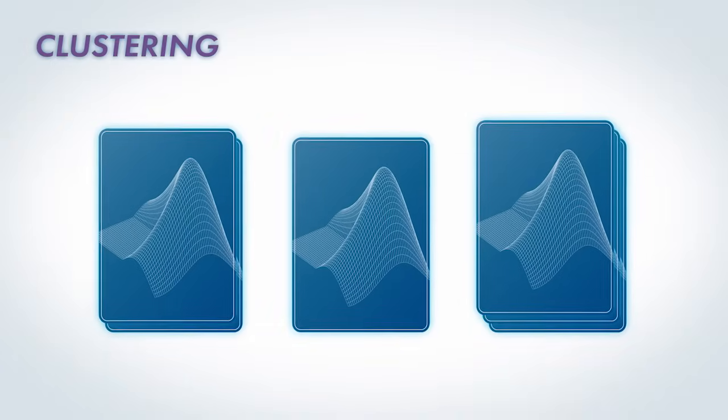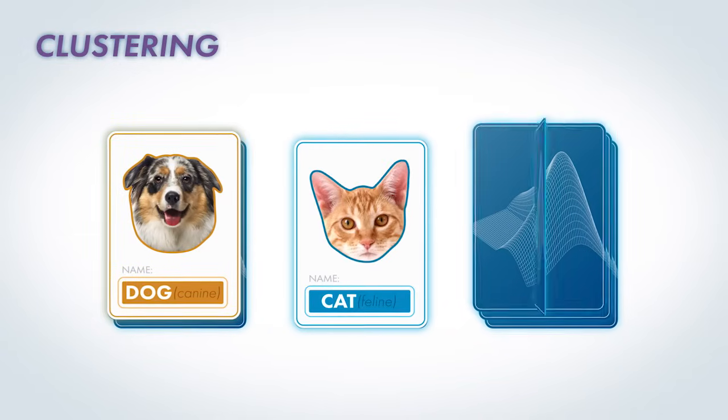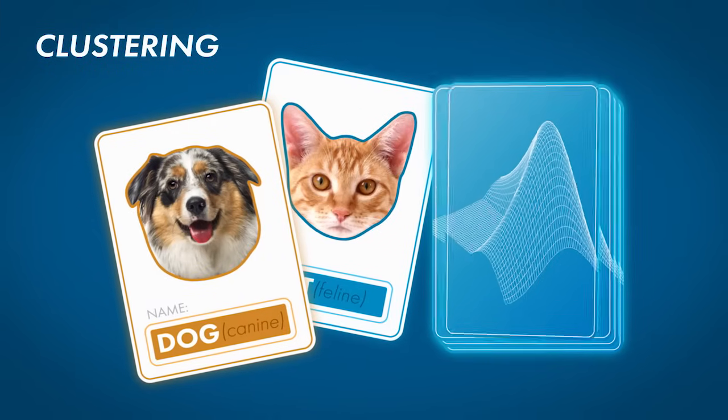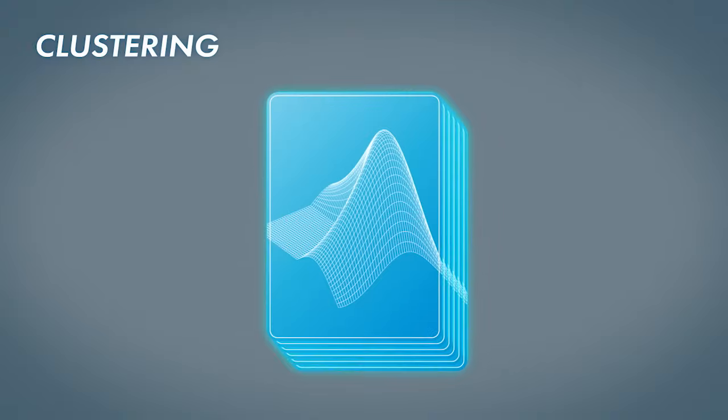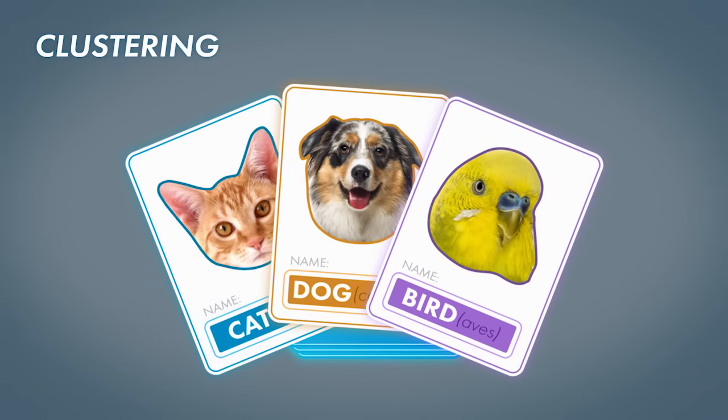Some of you say, aha, I see three different groups here: clearly dogs, cats, and birds. Some of you see four-legged animals versus two-legged animals, and you put the cards into two piles. And those of you who put them into one pile might say they're all animals.